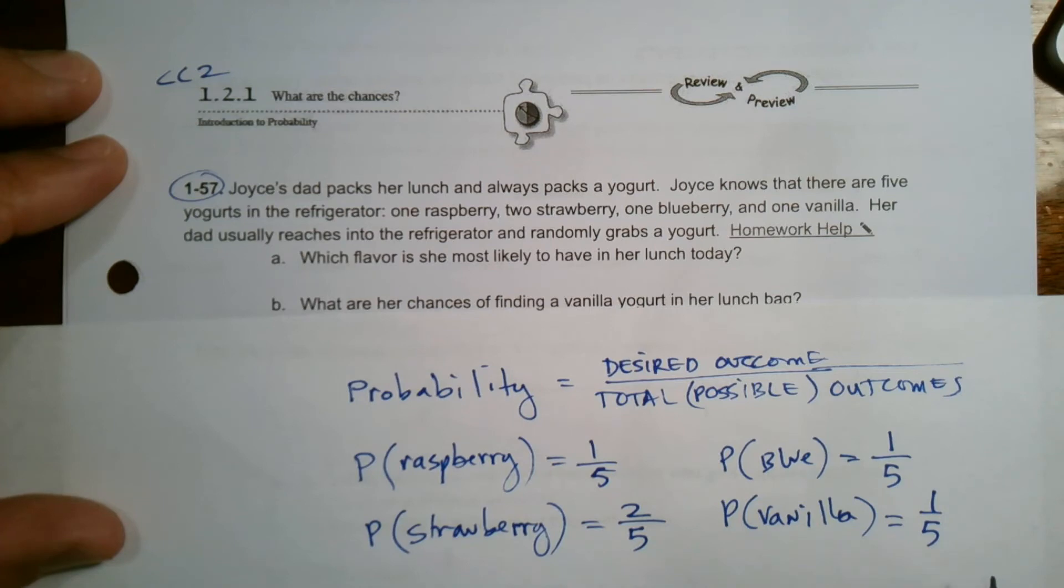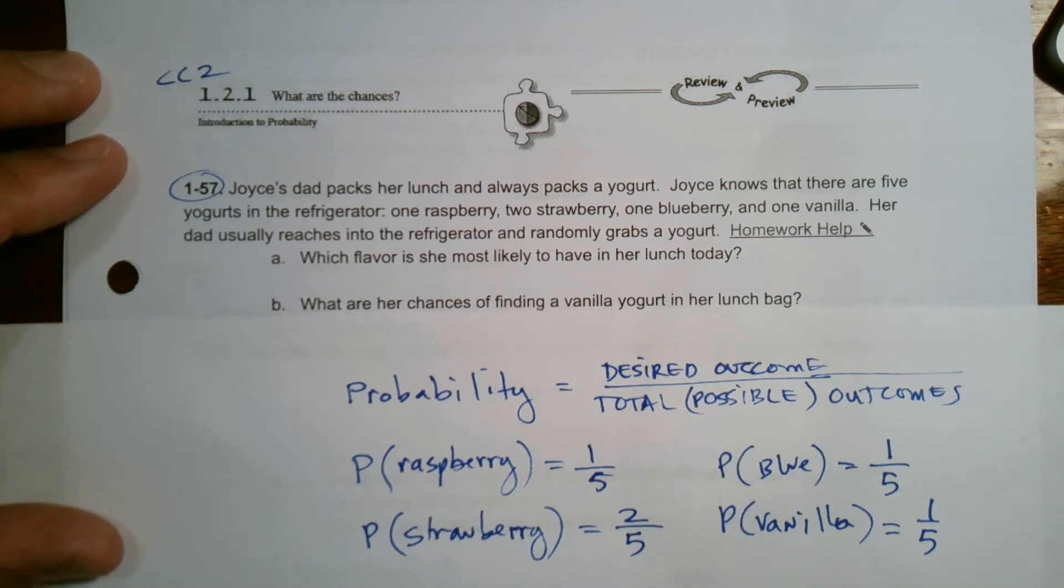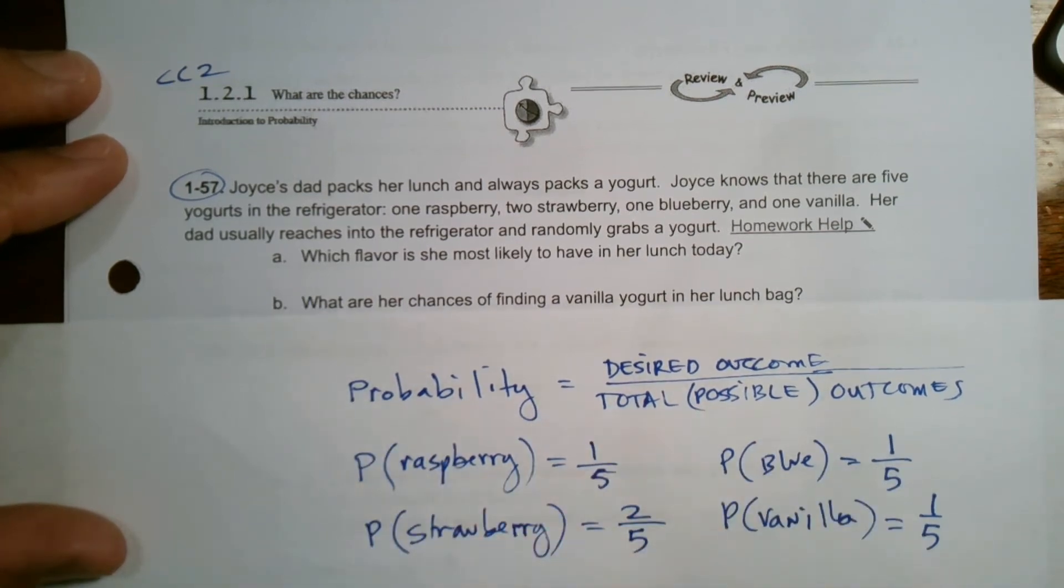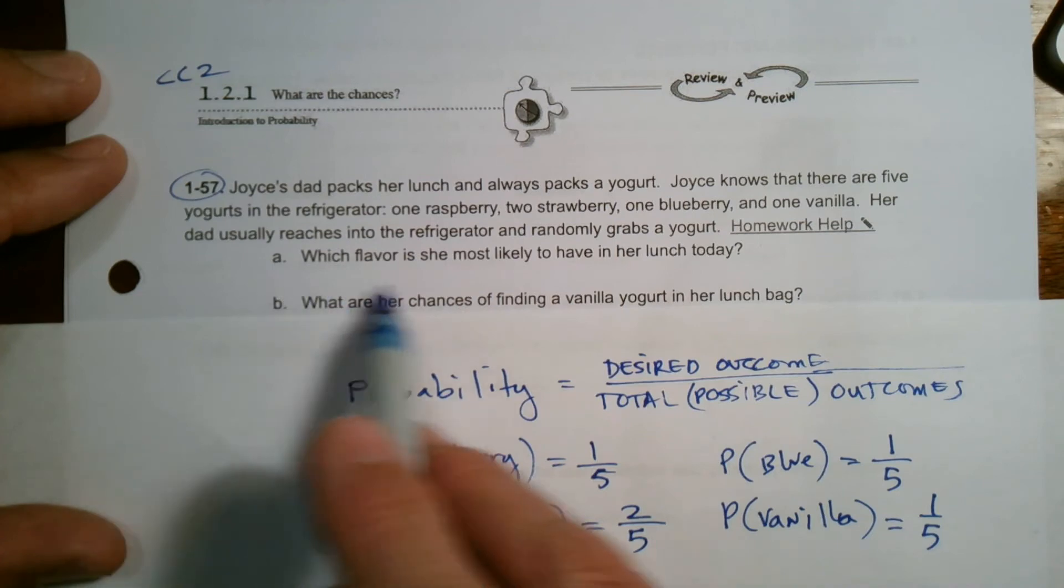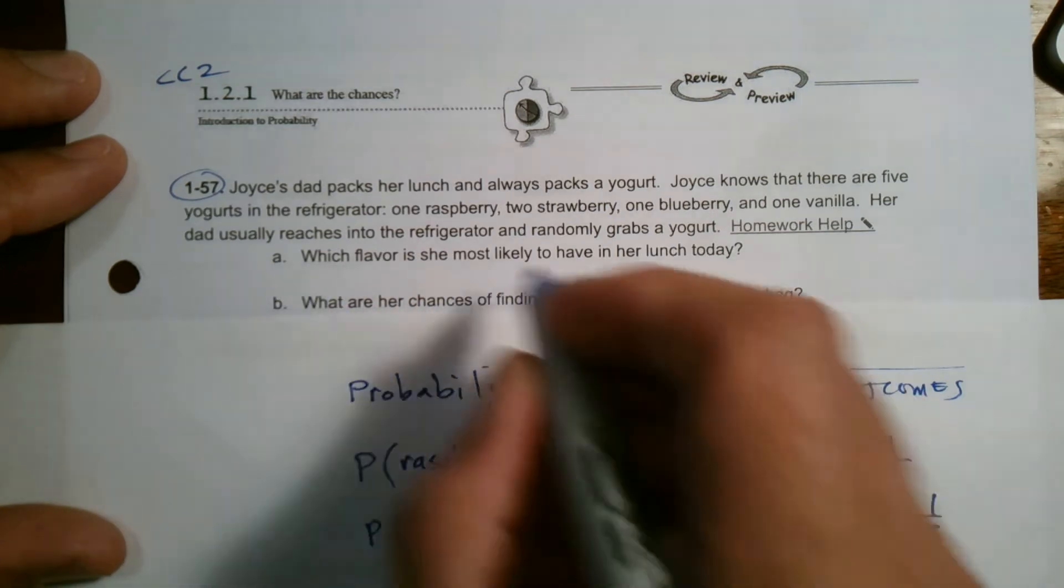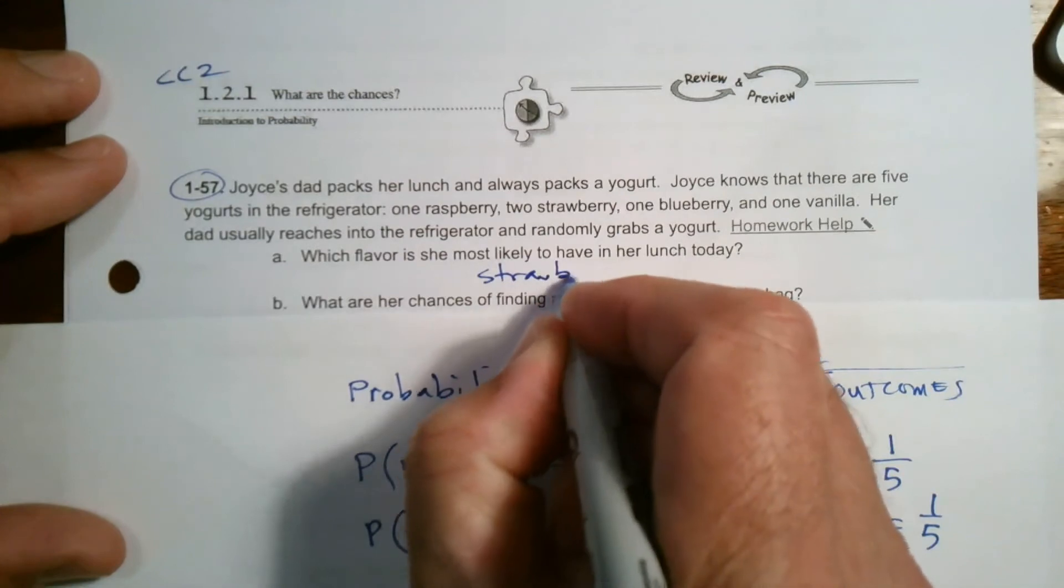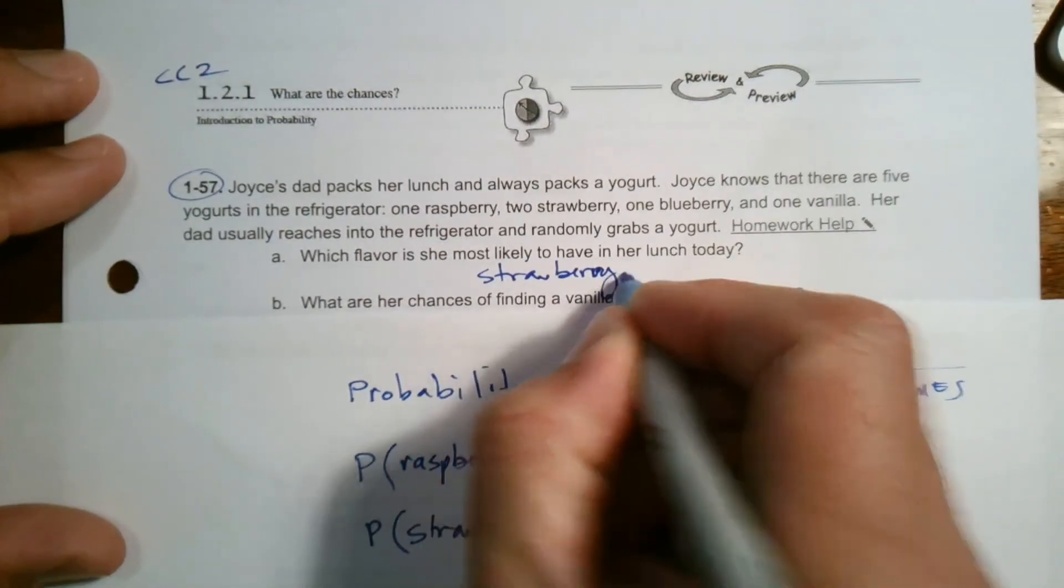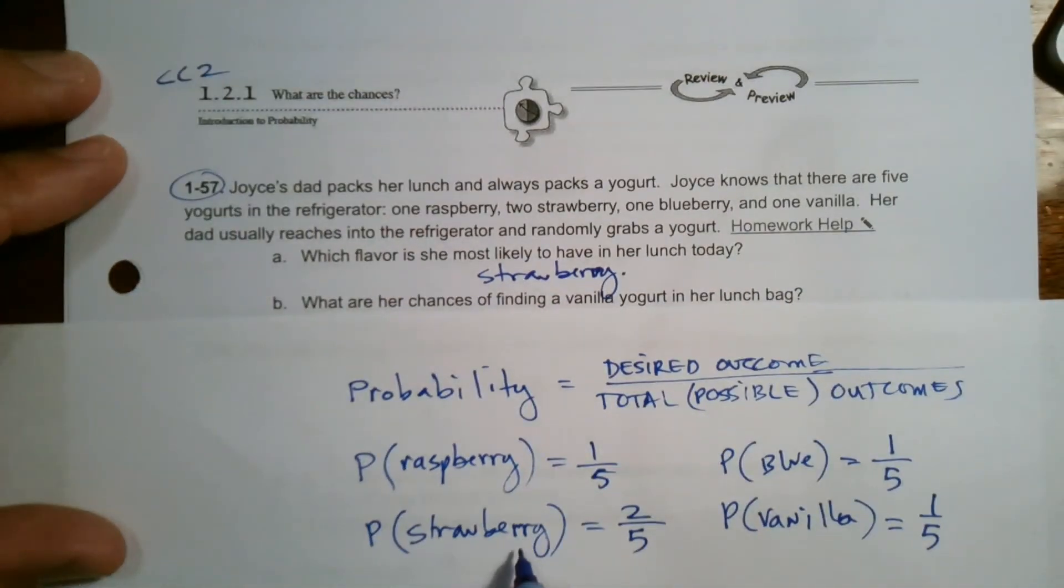Which one has the greater chance? The greatest probability is strawberry at 2/5. So for question A, she would most likely have strawberry in her lunch because that has the largest probability.